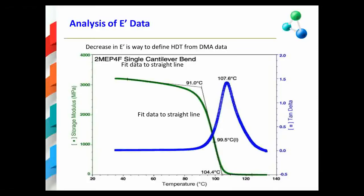Here is the analysis done on the DMA data that we have seen before. It can be seen that by performing the proposed analysis, the HDT value for this polymer is estimated to be 91 degrees centigrade. Note that this is about 17 degrees C lower than the Tg value obtained from the tangent delta peak. The E prime data indicates a decrease beginning at about 91 degrees centigrade, whereas the tangent delta peak is at approximately 108 degrees centigrade.